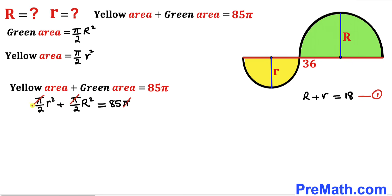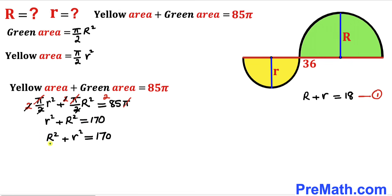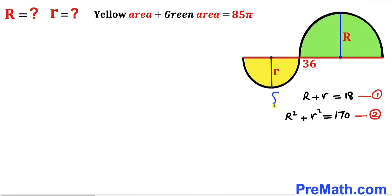Multiplying every term by 2 to clear the fraction, the 2s cancel, leaving us with r² + R² = 85 × 2 = 170. I'll label this as equation number two. We now have a system of two equations to solve for lowercase r and uppercase R.